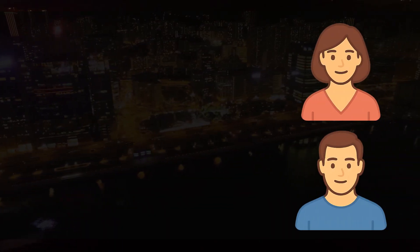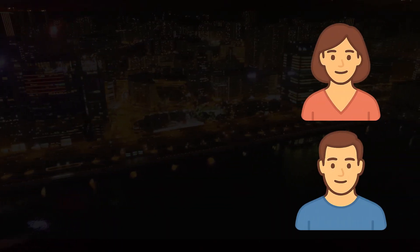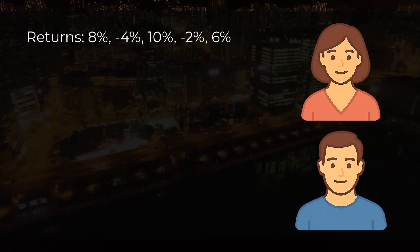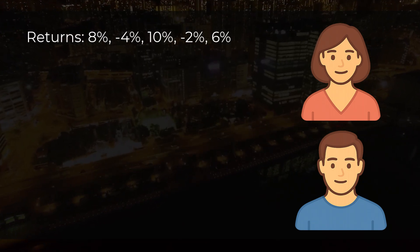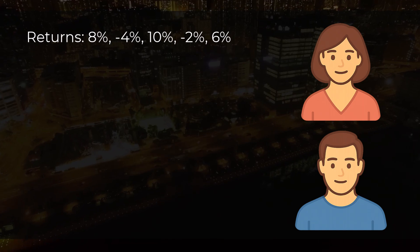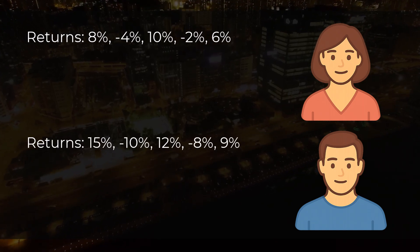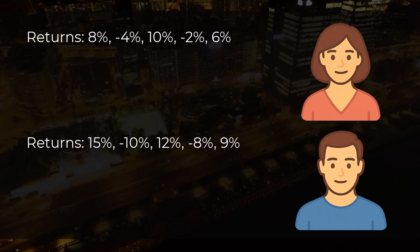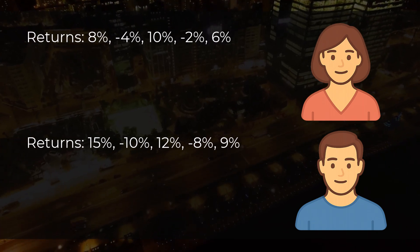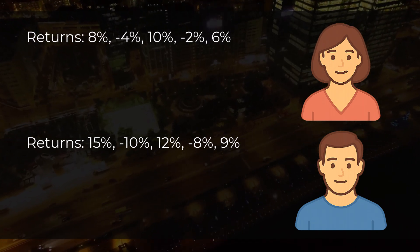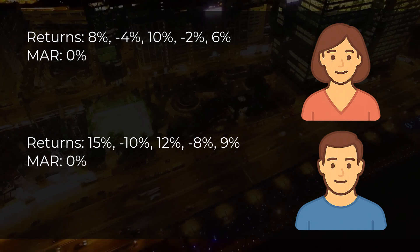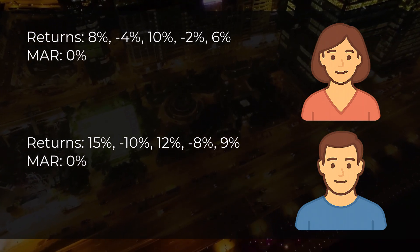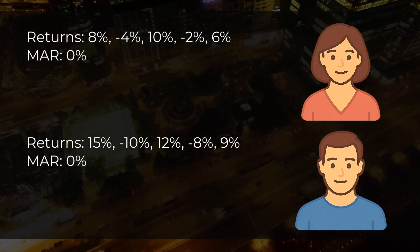Let's make this easy with an example. Imagine two friends, Sarah and Mike, each investing over 5 years. Sarah's returns are 8%, -4%, 10%, -2%, and 6%. Mike's returns are 15%, -10%, 12%, -8%, and 9%. We'll use 0% as their MAR, which means everything below 0% is considered downside risk.